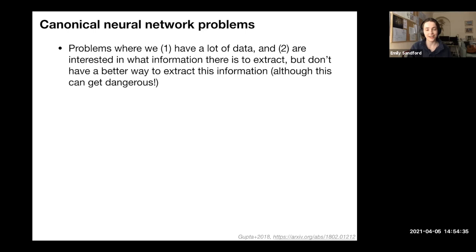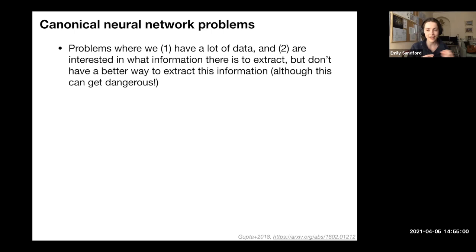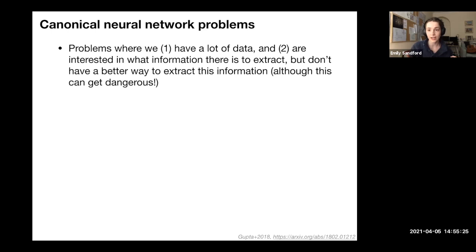A third reason to use a neural network — and this can get a little dangerous — is when you have a lot of data you know contains information about what you want to learn, but you don't have adequate theory to extract it in a theory-motivated way. You just want to see how much information is in there if you fit a really powerful model. Neural networks will learn whatever's in your training set, regardless of whether it's scientifically important, so you must carefully test that your predictions are scientifically meaningful and not just artifacts of your particular training set. One safer approach is to work with simulated data.